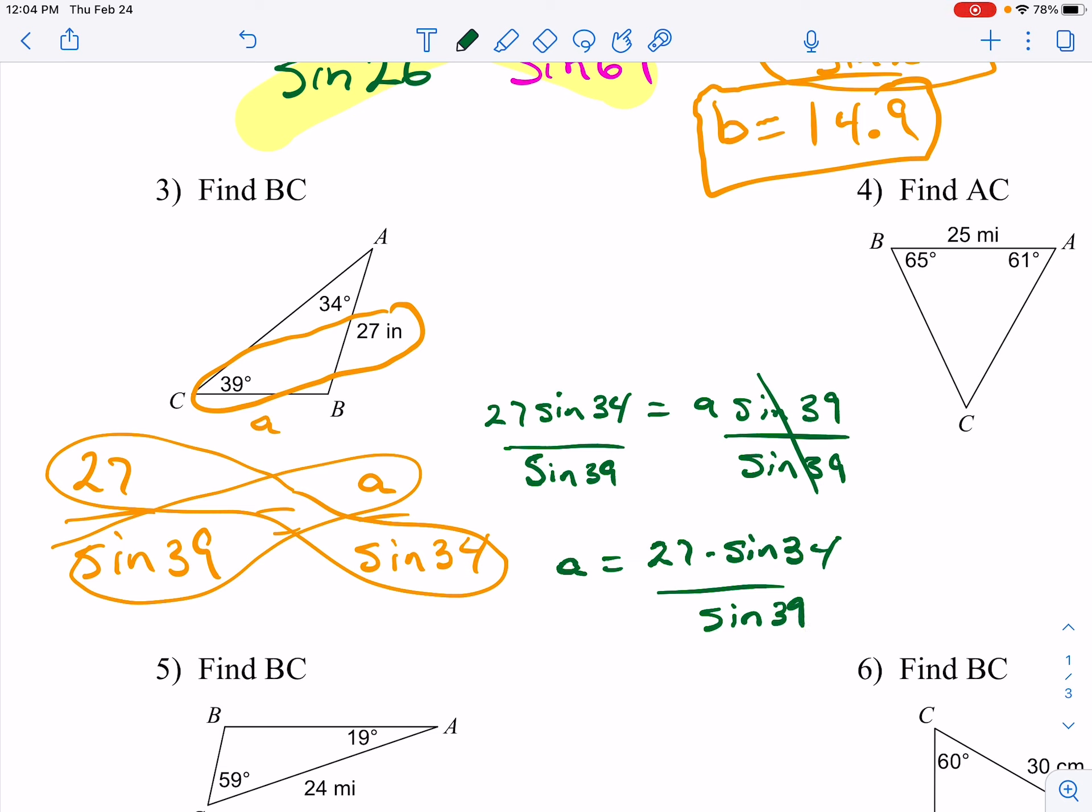So A is equal to 27 times the sine of 34 divided by the sine of 39. Put that in our calculators, divided by the sine of 39, and I get about 23.99. If I go to the nearest tenth, that should make it 24.